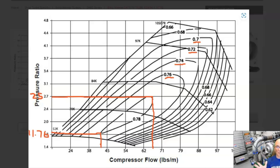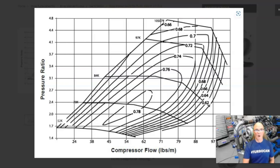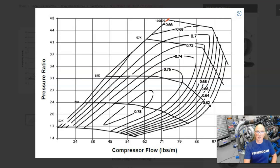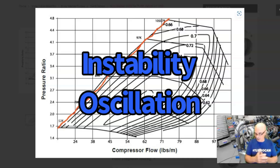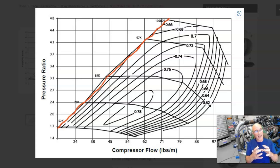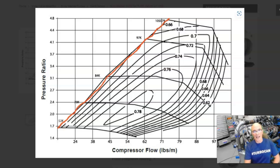Now let's take a look at the surge line. This is the surge line, and it goes all the way up the left side of the map. What is compressor surge and why is it bad? Compressor surge is basically aerodynamic instability — oscillation or even reverse flow. It's bad because for sustained aggressive surge, you can actually destroy the turbo and the compressor wheel. I'm going to show you how you get a turbo into surge and therefore how to avoid it.